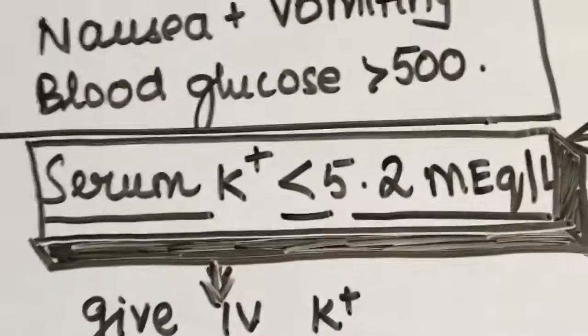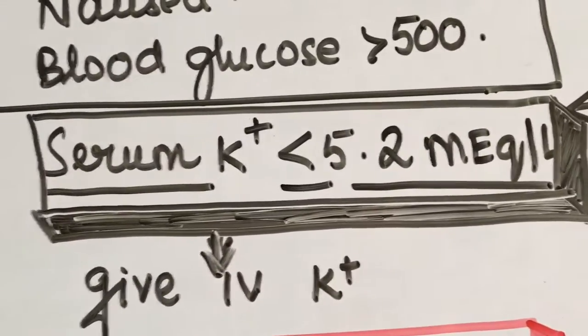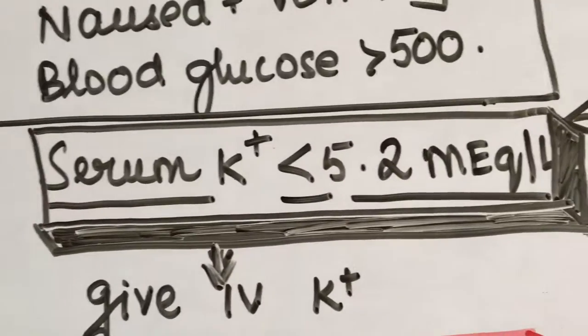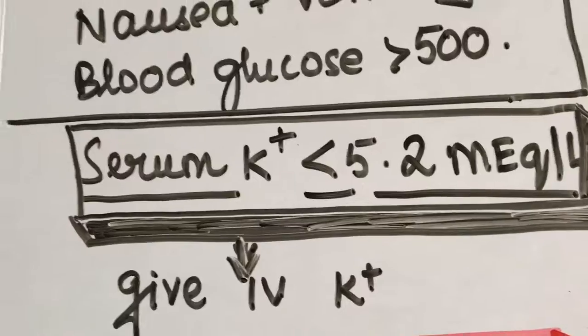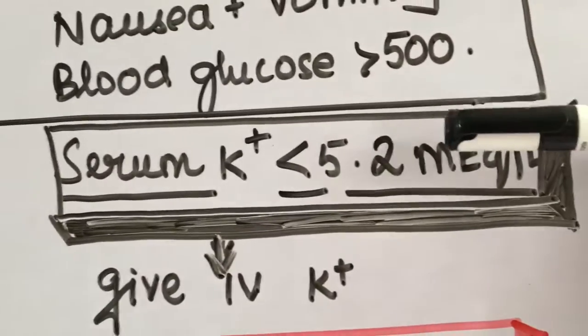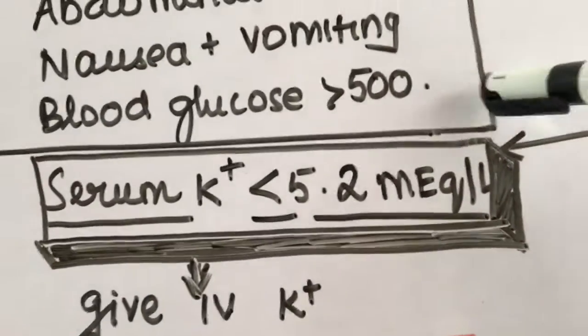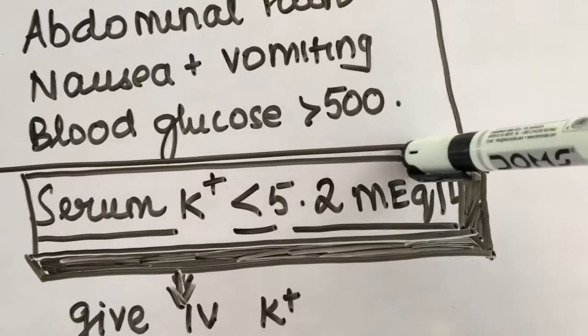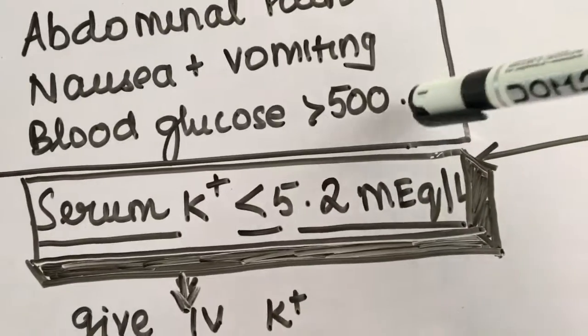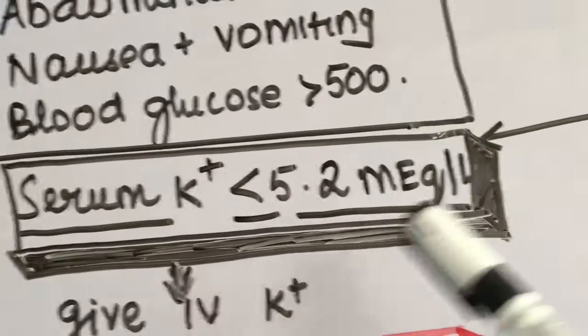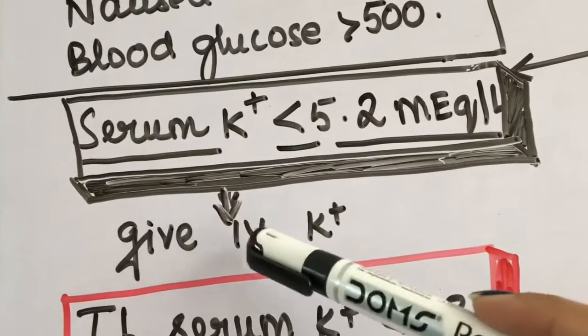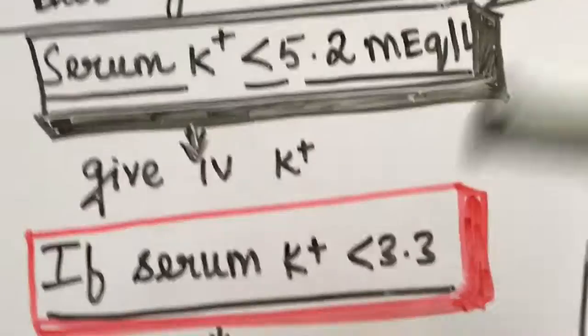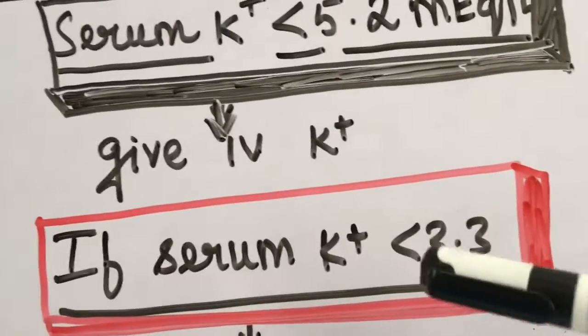As we all know, the normal values of serum potassium are 3.5 to 5 milliequivalent per liter. So if it is less than 5.2, because you have to take it as a fact that all these patients with DKA and HHS are almost potassium depleted even though they have normal levels, you have to start the IV potassium. But if the serum potassium is less than 3.3, that is hypokalemia which is way more evident here...